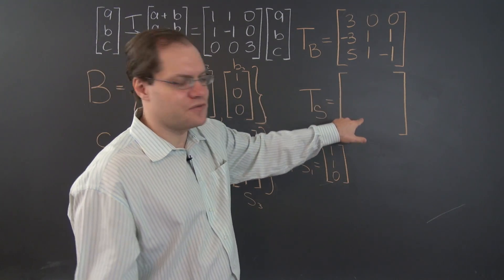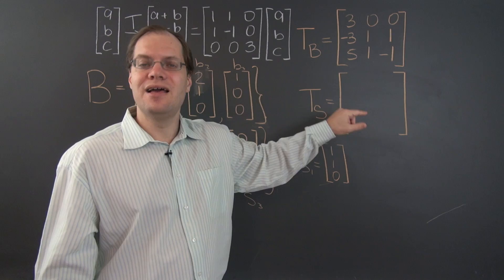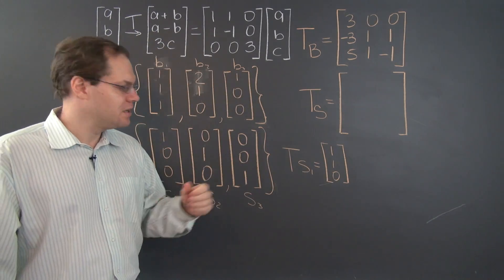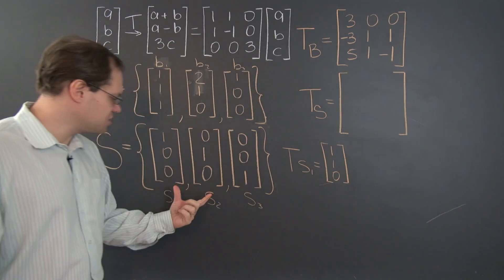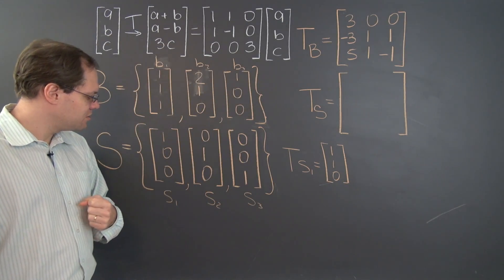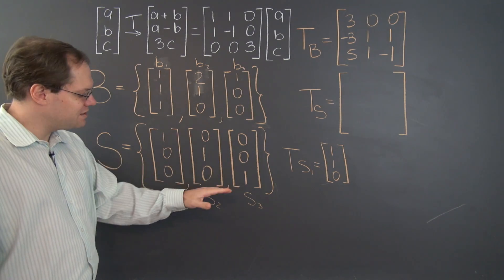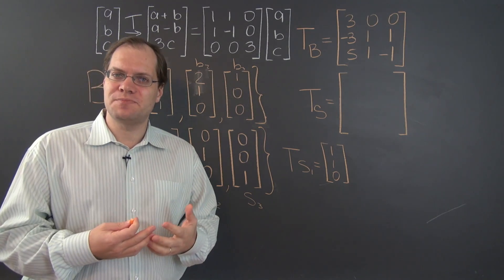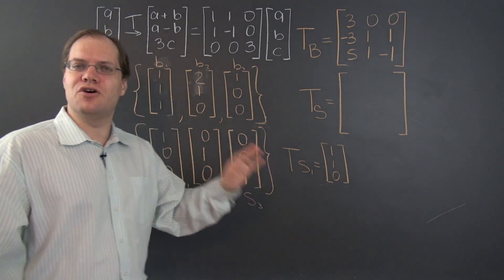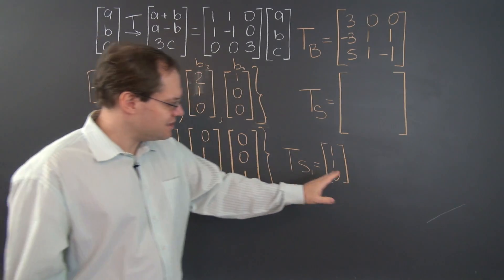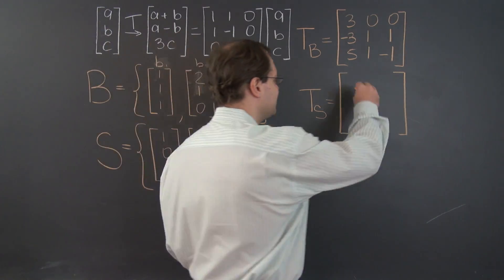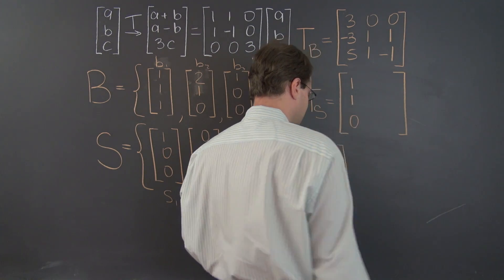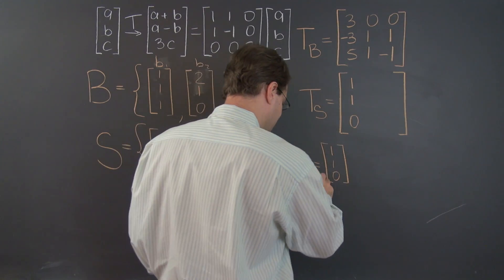it's not this vector that goes as the first column of the resulting matrix. It is its components with respect to the basis we're working with. And what are the components of this vector with respect to the basis we're working with? Well, it's 1, 1, 0. This basis is distinguished by the fact that components with respect to this basis equal the entries of the vector. It's the only basis like that. So it is these numbers, after all, that end up in the first column of this matrix. 1, 1, 0. Now, let's do the same thing for S2.